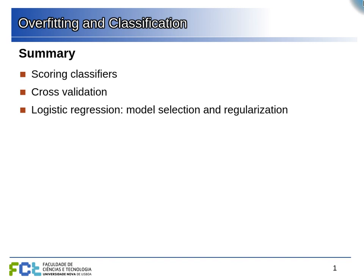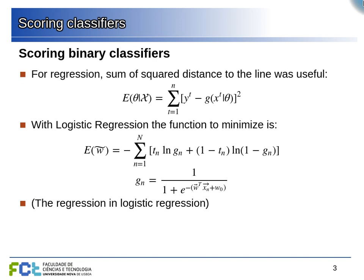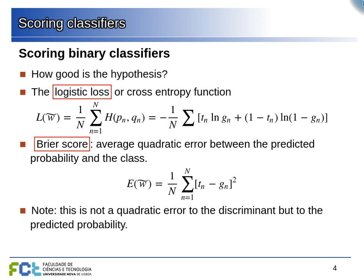The first problem is how to score a classifier. When doing regression we use the mean quadratic error between predictions and the actual points. With logistic regression we minimize the logistic loss function — that's one way of measuring how well the classifier is working, but it only applies to logistic regression. A more generic score is called the Briar score.